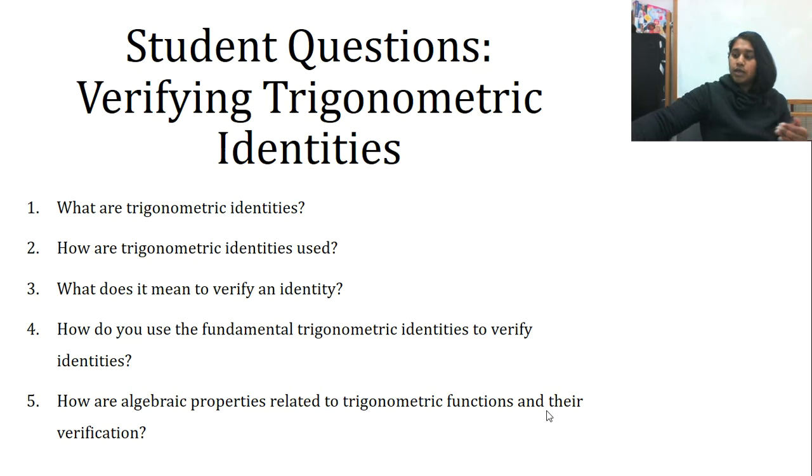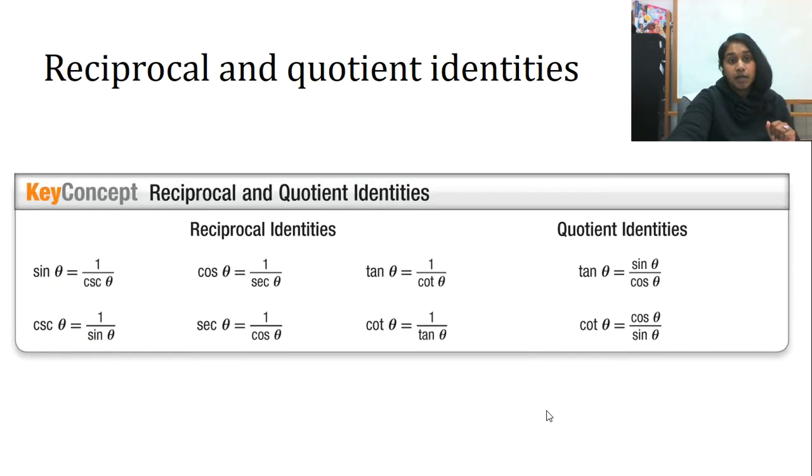Then you get this content. What are trigonometric identities? How are trigonometric identities used? What does it mean to verify an identity? How do you use the fundamental identities to verify identities? And how are algebraic properties related to trigonometric functions and their verification?